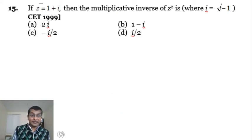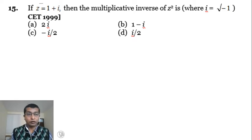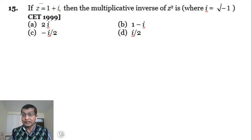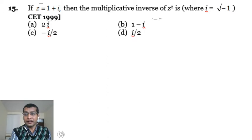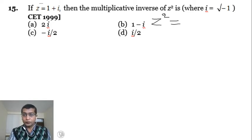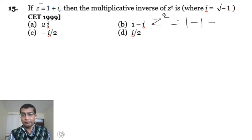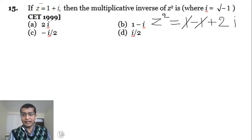We will go through example 15. Last class we solved example 14, now we discuss example 15. If z equal to 1 plus i, find the multiplicative inverse of z squared. Since z equals 1 plus i, squaring both sides gives z squared equal to 1 plus i whole squared. Expanding, we get 1 plus 2i plus i squared, which equals 1 plus 2i minus 1. So z squared equals 2i.